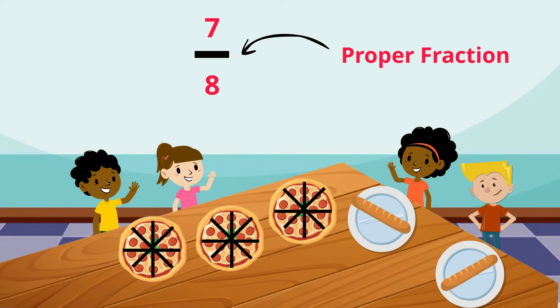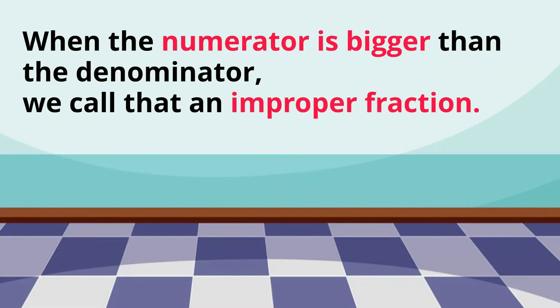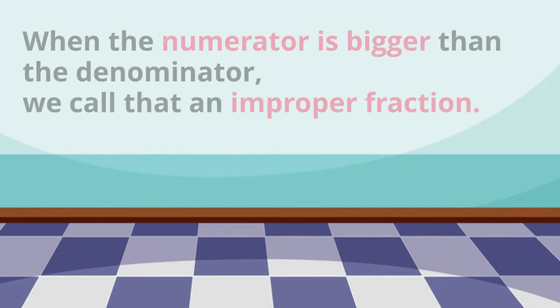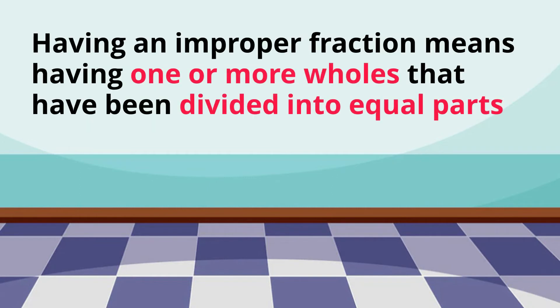But what happens if the numerator is bigger? Well, if the numerator is bigger than the denominator, we call that an improper fraction. Having an improper fraction means having one or more wholes that have been divided into equal parts.